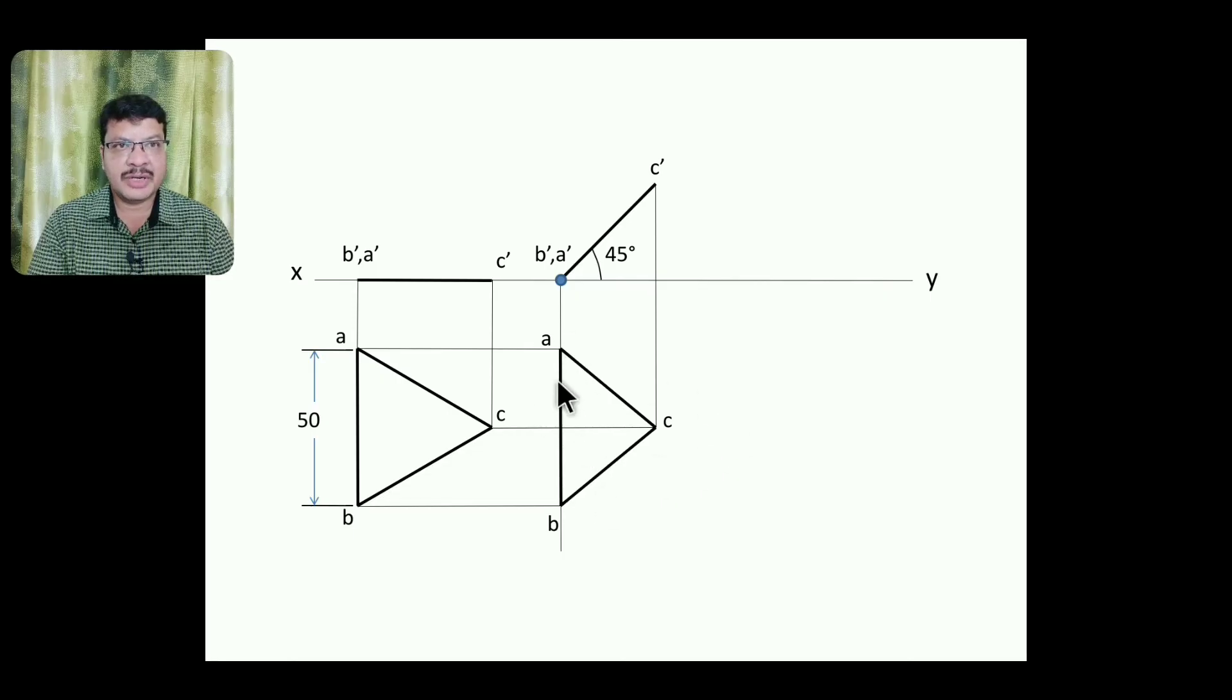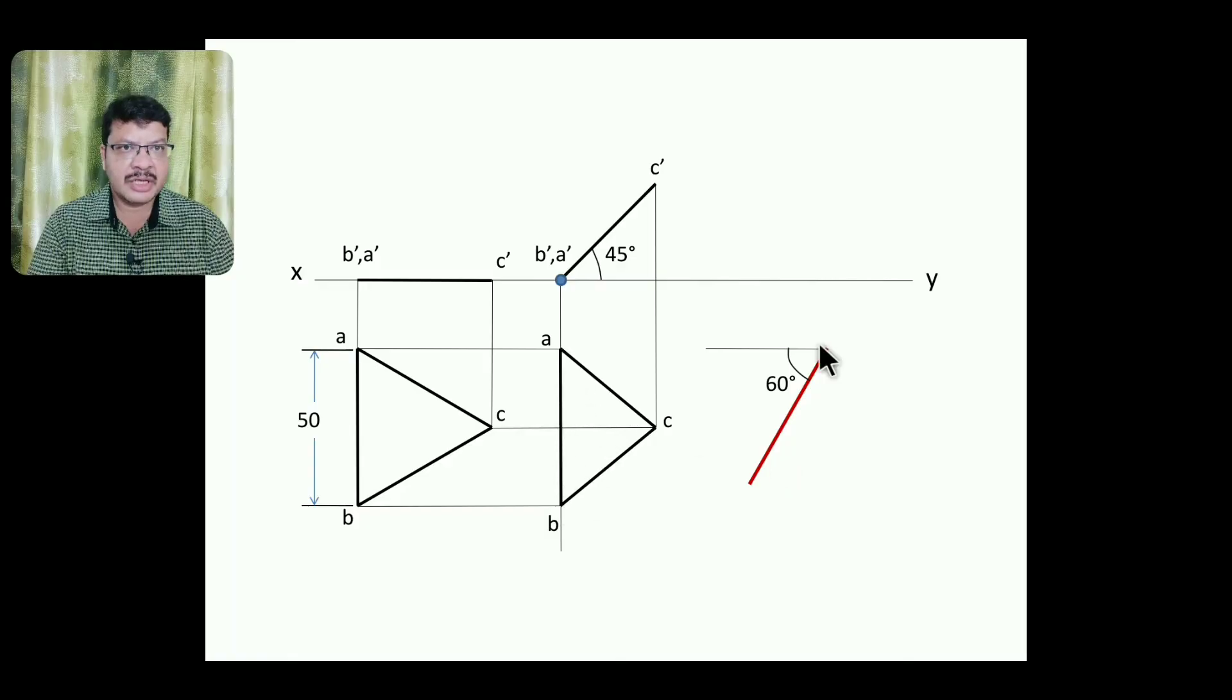Now this particular edge AB is making an angle of 60 degrees with VP, that's why somewhere here randomly draw a 60-degree line and along this line you mark this AB length. You can measure with compass and you mark that here along 60 degrees. Now to get C point, take AC distance and A is centered drawn arc, B is centered drawn arc, automatically you will get C.